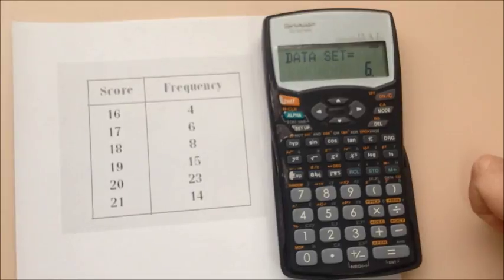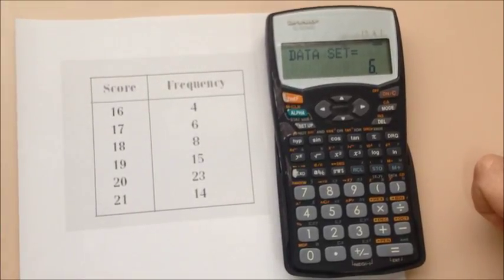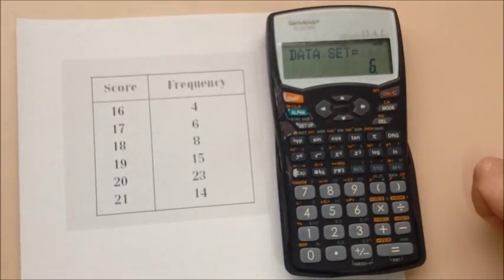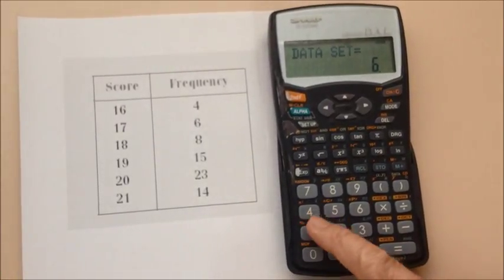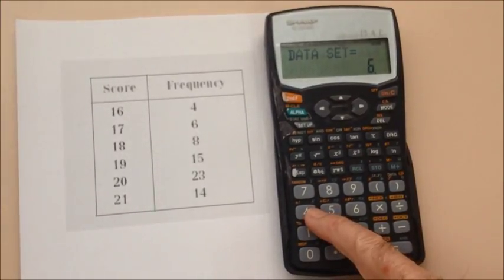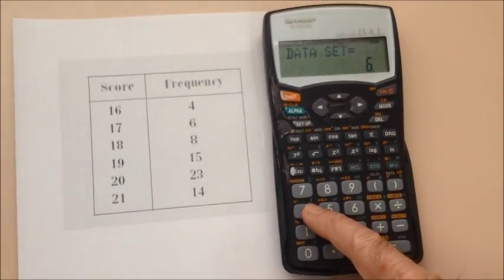And now I need to access the calculator to find out the information that I want. For example, I might wish to find the mean. The mean is given by the number four here. It's just above the number four button. There is an X bar symbol.